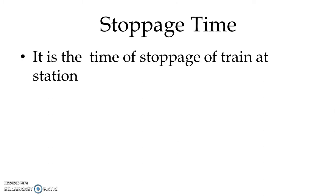Stoppage time is the time of stoppage of the train at a station. Stoppage time is required to calculate the scheduled speed. It is denoted by small t with suffix S, where suffix S stands for stoppage.